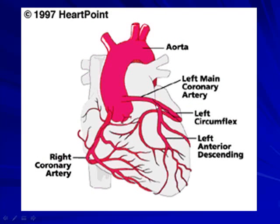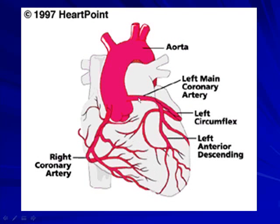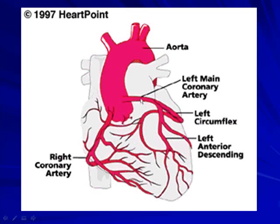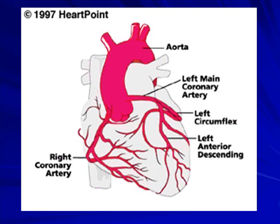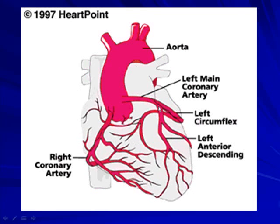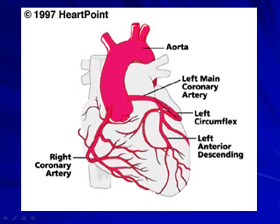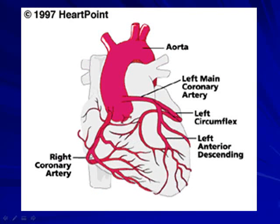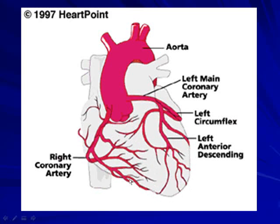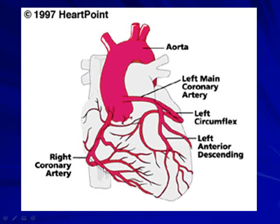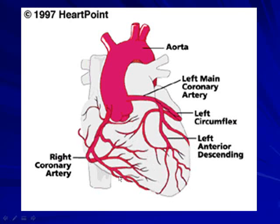This illustration shows how the names can differ. The left coronary artery can be referred to as the left main coronary artery. You should be able to identify the anterior descending artery or left anterior descending artery, the left circumflex artery, and the right coronary artery. Also, the marginal branch of the coronary artery — you should be able to identify that.